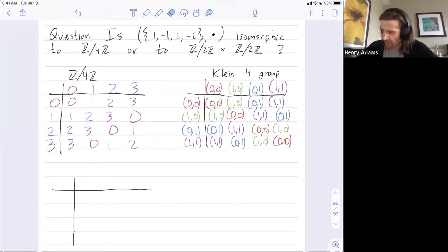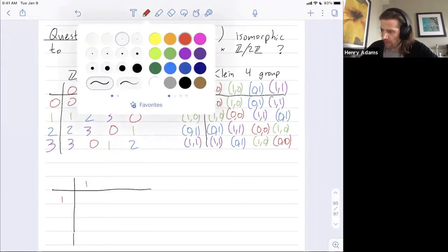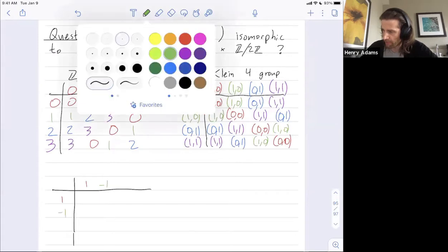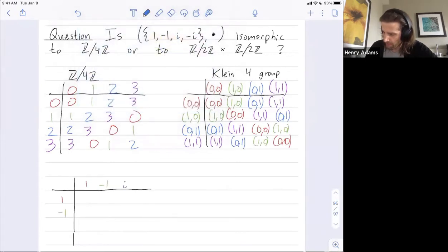So the elements are 1, negative 1, i, and negative i. But let's decorate them. So my elements are 1, negative 1, i, and negative i. And let's fill out this multiplication table.